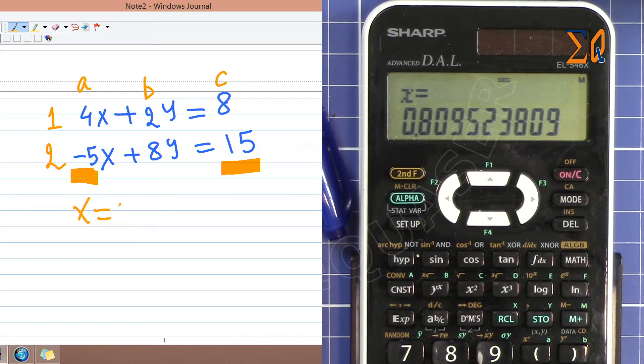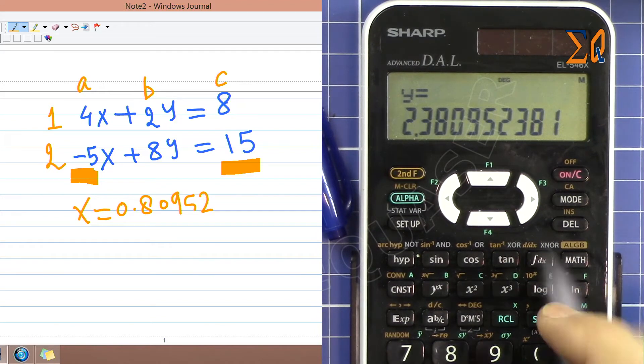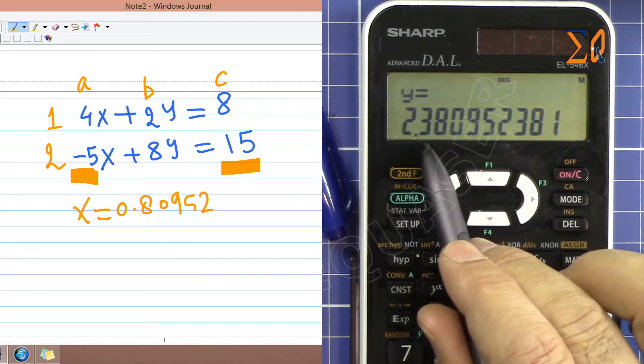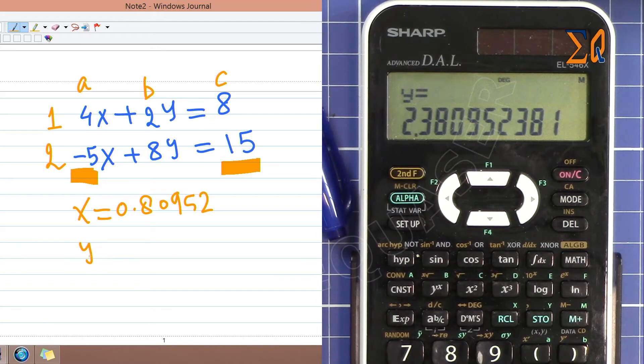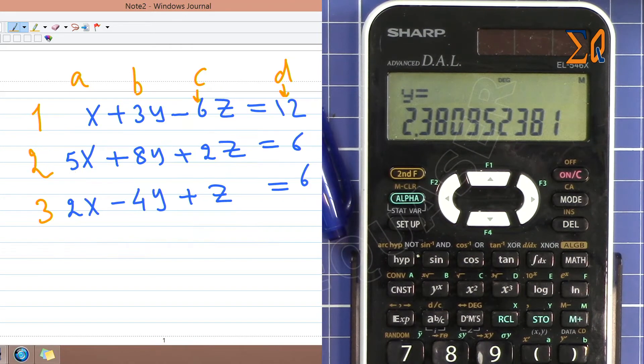So now the answer appears here. X is 0.80952, and then press equal sign again. Y is 2.380952 and so forth.